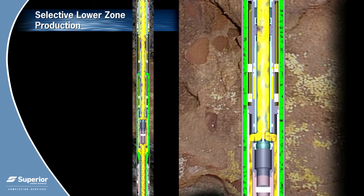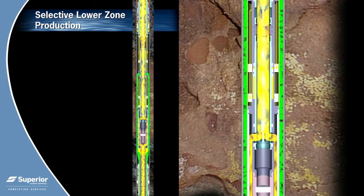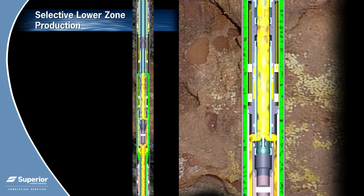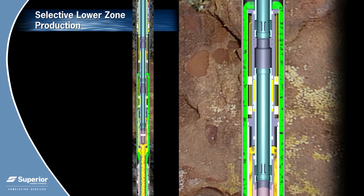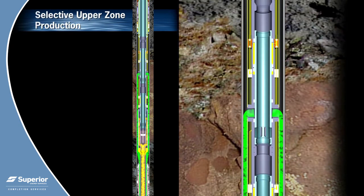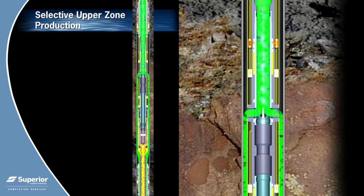The utilization of downhole surveillance equipment provides the operator the ability to capture flowing temperatures and live pressures on multiple intervals at all times. To change the production flow path, both hydraulic multi-service valves are closed and the well is isolated or shut in downhole. The upper interval is then placed on production by hydraulically opening the upper hydraulic multi-service valve sleeve.